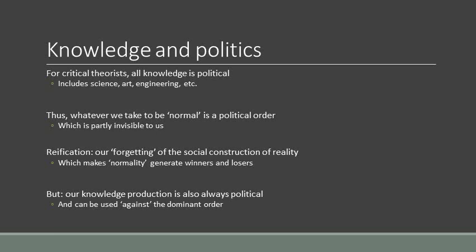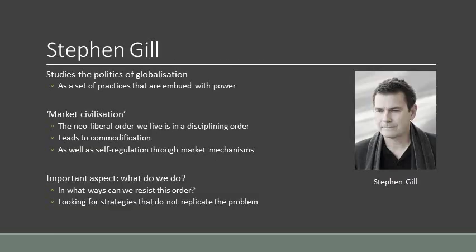But the critical theorists argue that since our knowledge production is also always political, we can try to use it against the dominant order. We can try to unthink ourselves, at least partially, from that dominant order. So let's give some examples here — three to be exact.